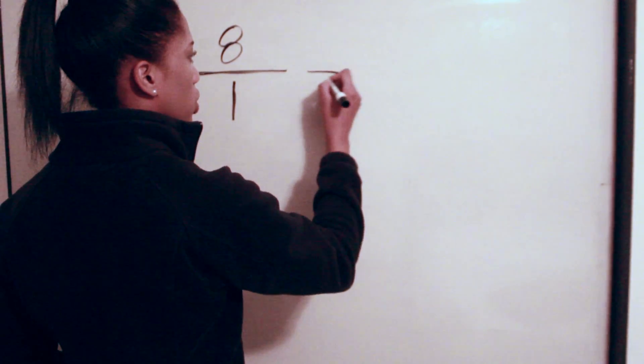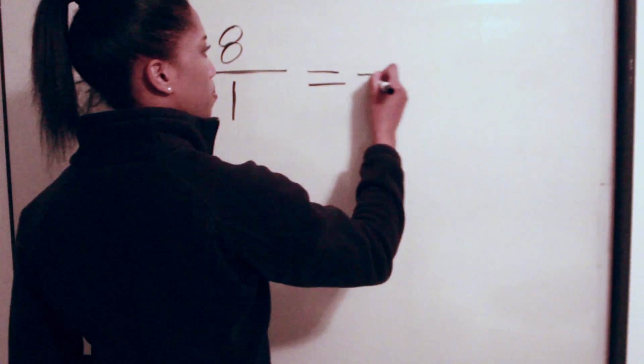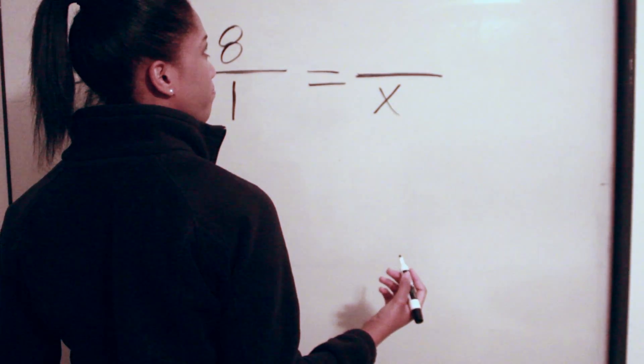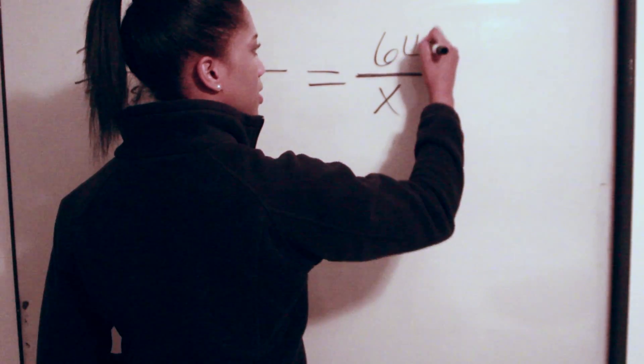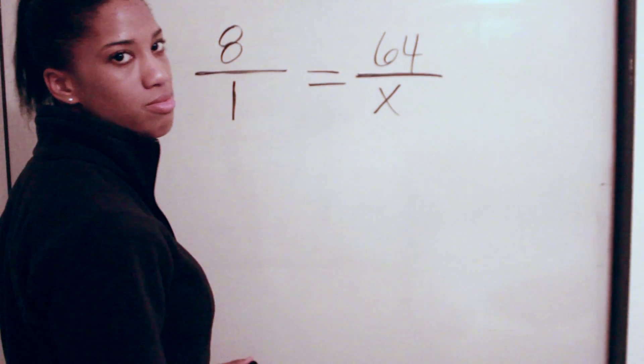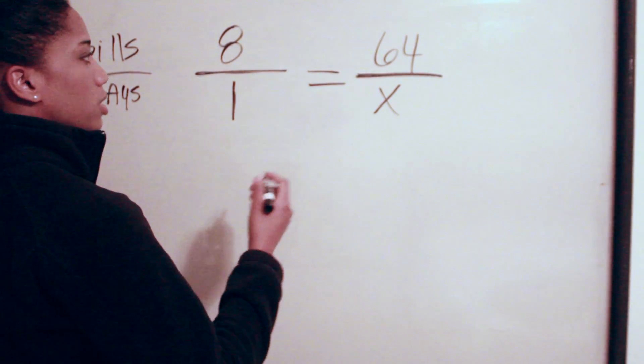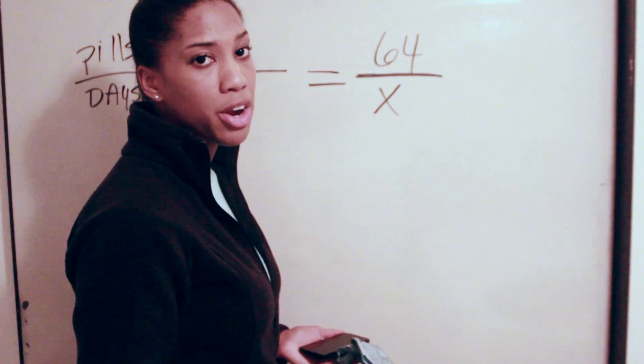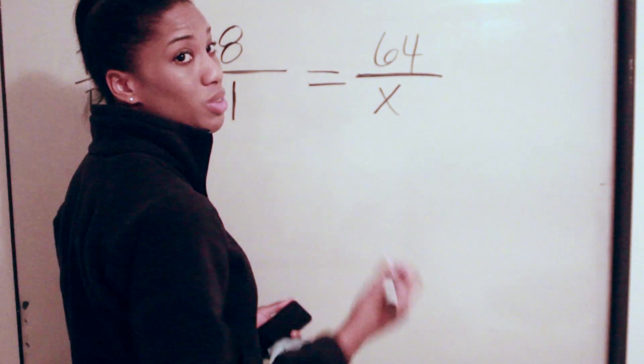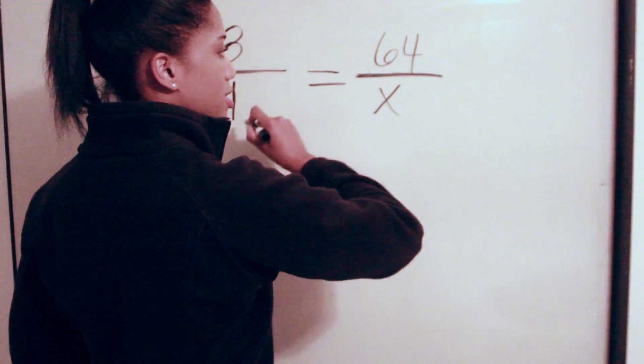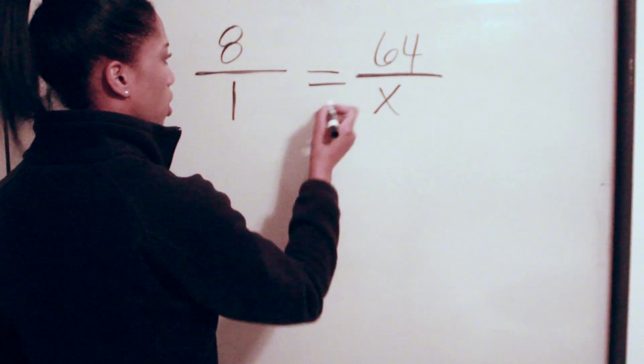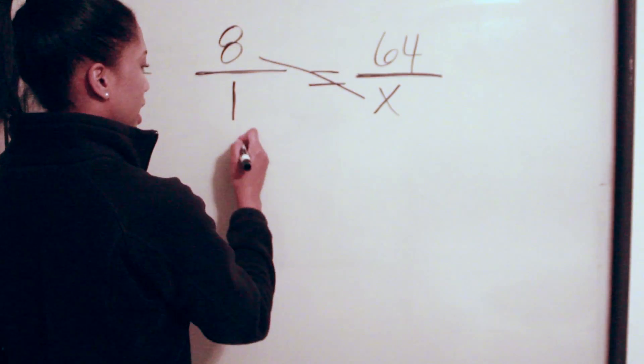This patient has eight pills to one day, and we want to know how many days would be 64 pills. Again, what do we do? I like to start with the variable. You can do whichever way you'd like—just make sure when you're crossing you're doing the two that cross each other and multiply. So here we got 8X.